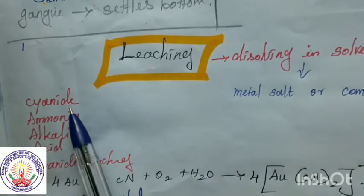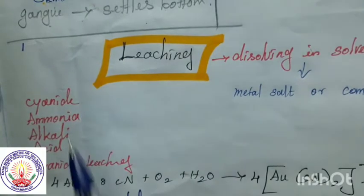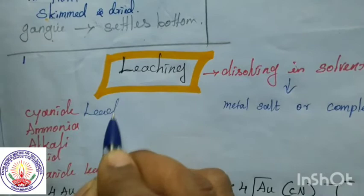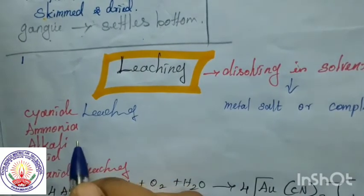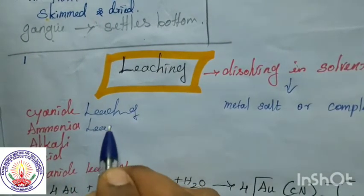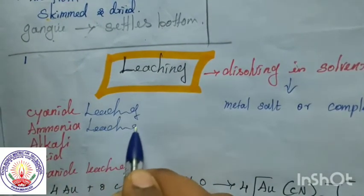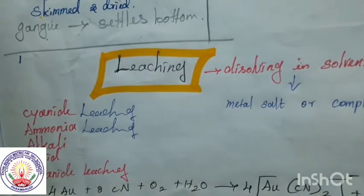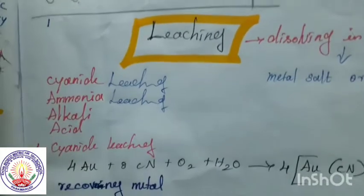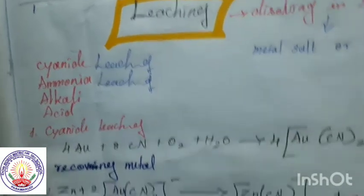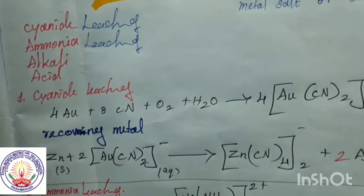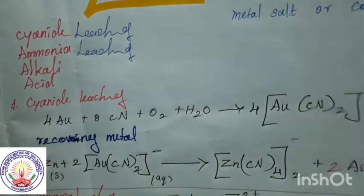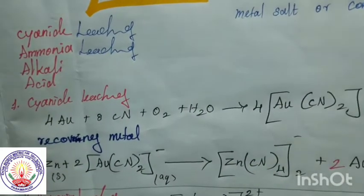When we use cyanide, it is called cyanide leaching. When we use ammonia, it is called ammonia leaching. With alkali, alkali leaching. With acid, acid leaching. Now we shall see these leachings one by one. Cyanide leaching is mainly used for aurum, that is, gold.